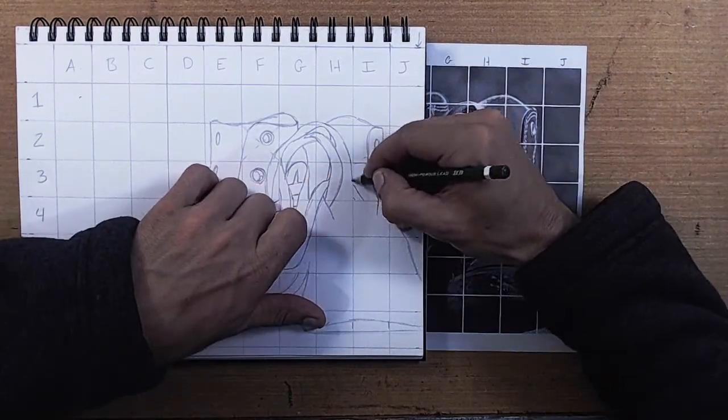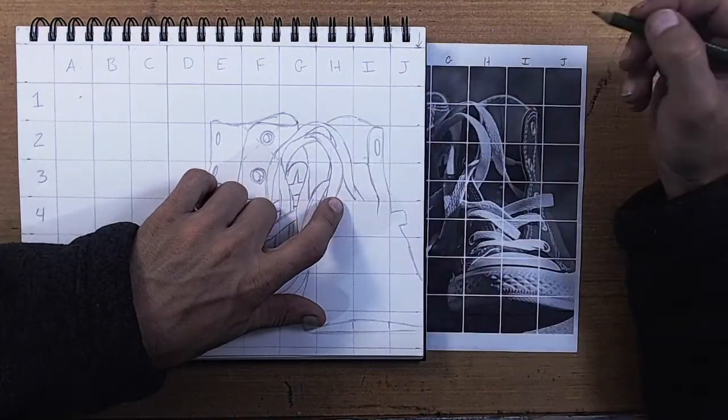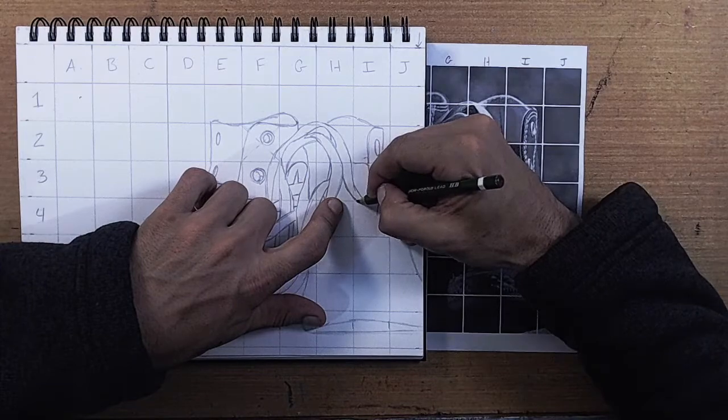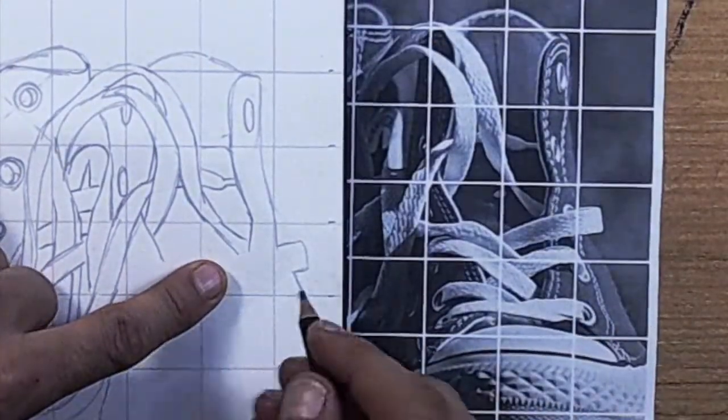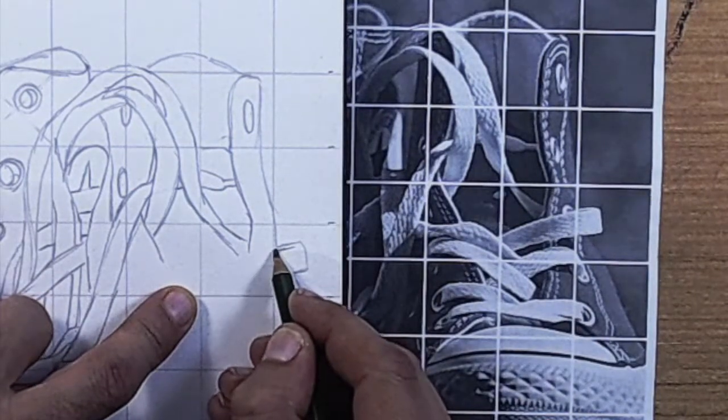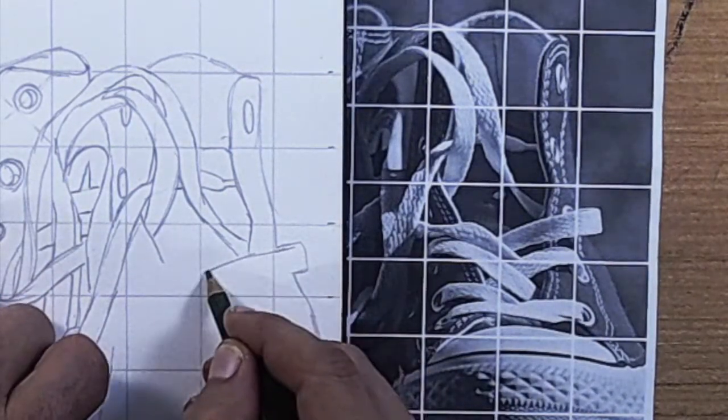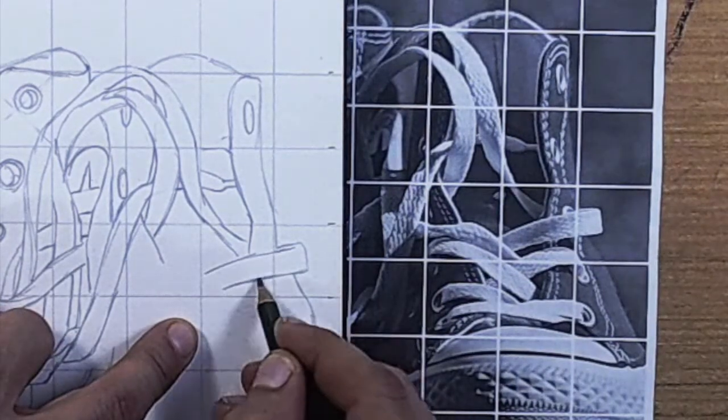Once we get into some of these smaller areas, it's probably not a bad idea to kind of work block by block. Trying to get most of the lines or hard edges that you see in a given block, go ahead and try to get those in place before moving to the next block because it is easy to lose your place as you get into some of these smaller details.